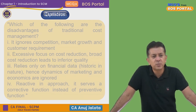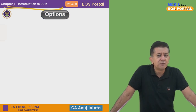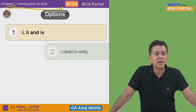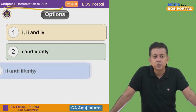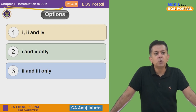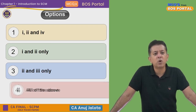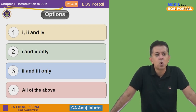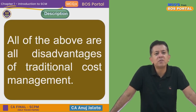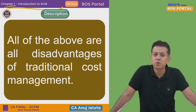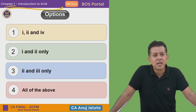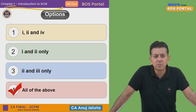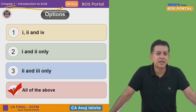So all four — the first, second, third, and fourth — are drawbacks of traditional cost management. Looking at the four options: (1) one and four, (2) one and two, (3) two and three, (4) all of the above. The answer is option number four — all of the above are disadvantages of traditional cost management.